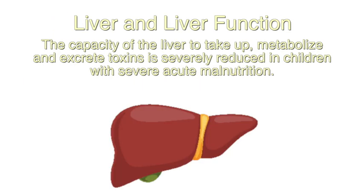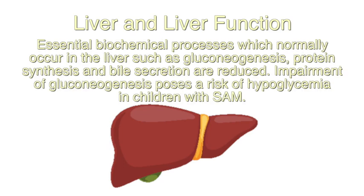Regarding liver and liver function: the capacity of the liver to take up, metabolize, and excrete toxins is severely reduced in children with severe acute malnutrition. Essential biochemical processes such as gluconeogenesis, protein synthesis, and bile secretion are reduced. Impairment of gluconeogenesis poses a risk of hypoglycemia in children with severe acute malnutrition.